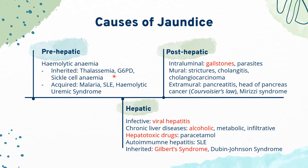Inherited and acquired causes of haemolytic anaemia include thalassaemia, G6PD deficiency, sickle cell anaemia, malaria, SLE, and haemolytic uraemic syndrome. For hepatic causes of jaundice, conditions reducing the liver's capacity to metabolise and excrete bilirubin include viral hepatitis, chronic liver disease due to alcoholic, metabolic, and infiltrative disorders such as amyloidosis and sarcoidosis, hepatotoxic drugs such as paracetamol, autoimmune hepatitis, and inherited causes such as Gilbert's syndrome.